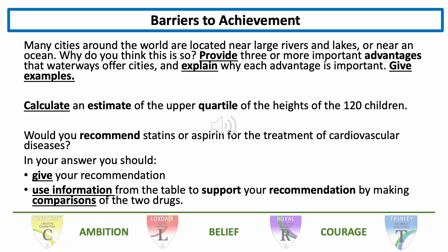Students who don't read regularly are also more likely to find certain question types more challenging. For example: 'Many cities around the world are located near large rivers and lakes or near an ocean. Why do you think this is so? Provide three or more important advantages that waterways offer cities and explain why each is important.' The key words in this question have been underlined and are known as command words. Students have to respond to these words to answer the question. If students don't have a secure understanding of the command words in the question, they are less likely to meet the requirements of the question.